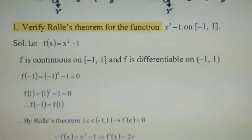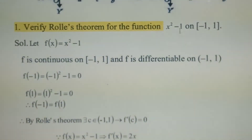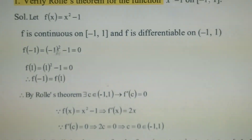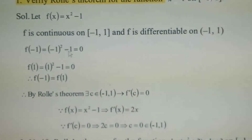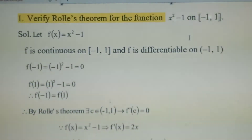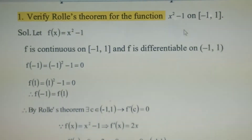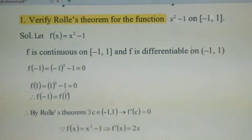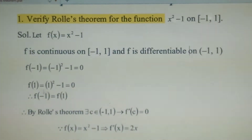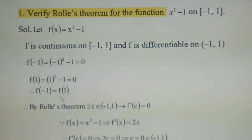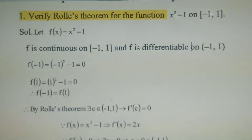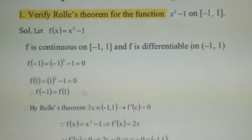Find f(-1). What is f(x)? f(x) = x² - 1. Put x = -1: (-1)² - 1 = 0. Again, find f(b). b value is 1, so put x = 1: 1² - 1 = 0. Therefore, f(-1) = 0 and f(1) = 0, which means f(-1) = f(1). So the given function is continuous, differentiable, and f(-1) = f(1).